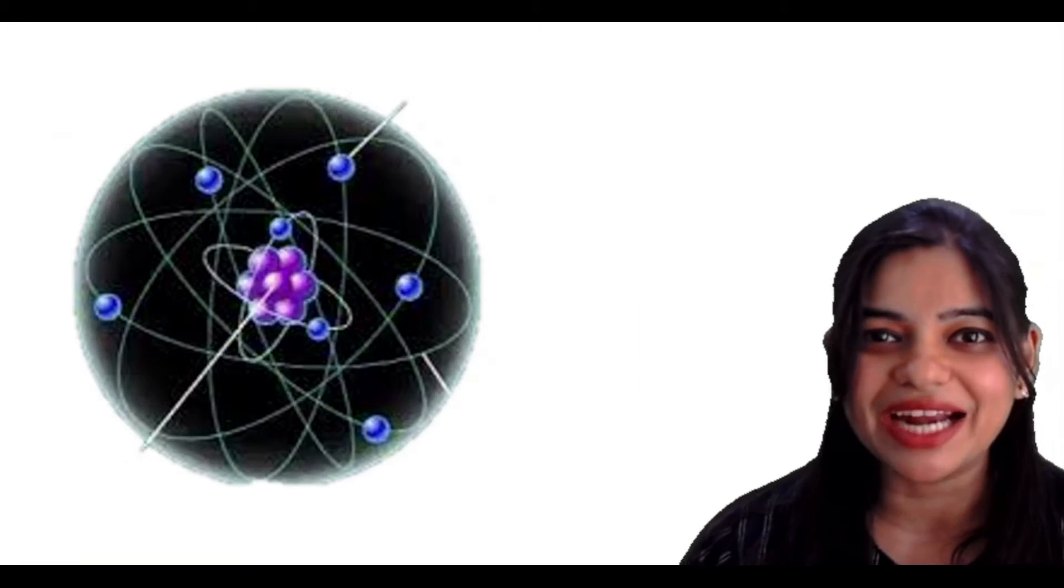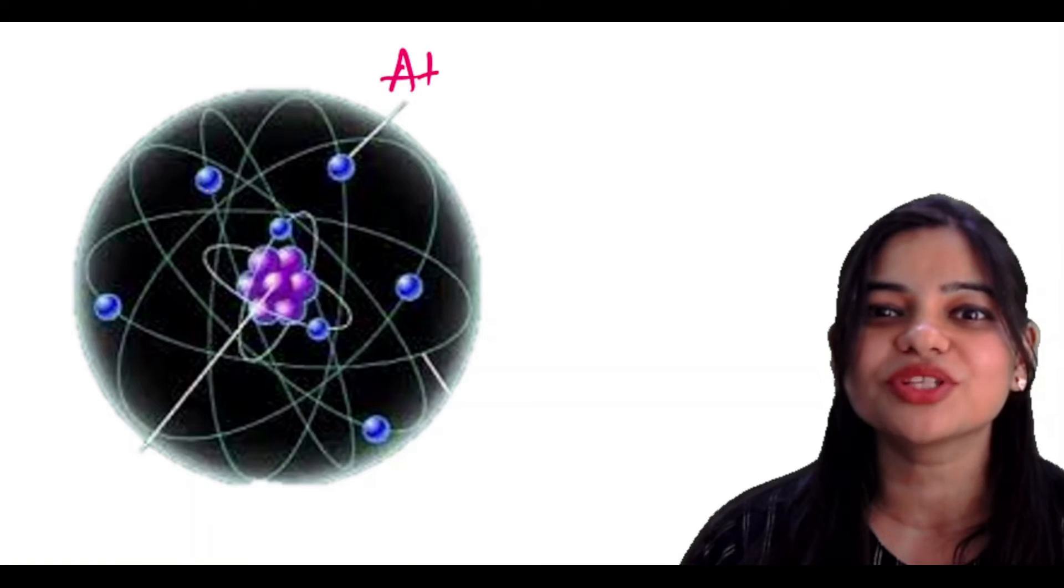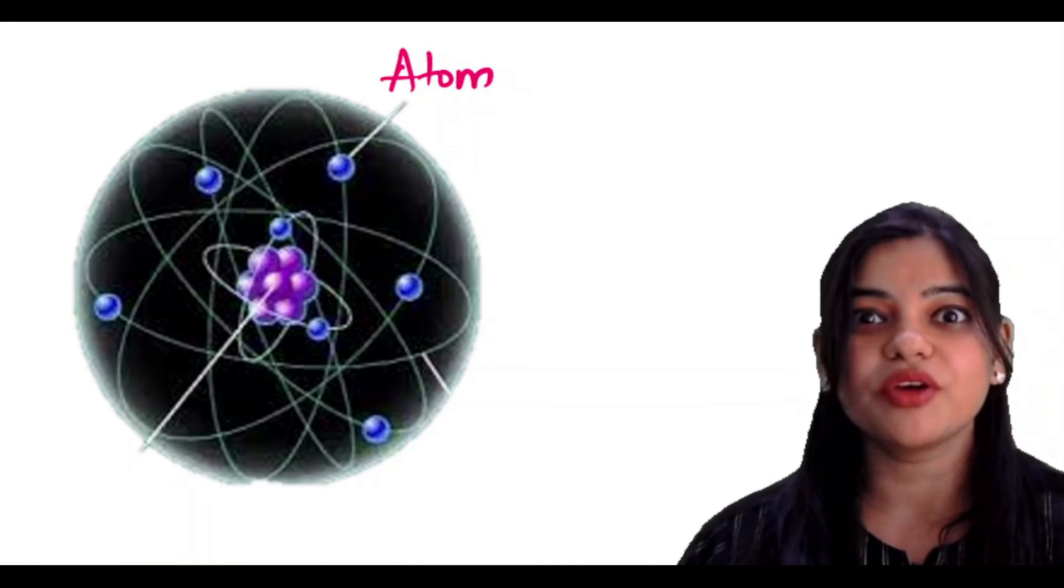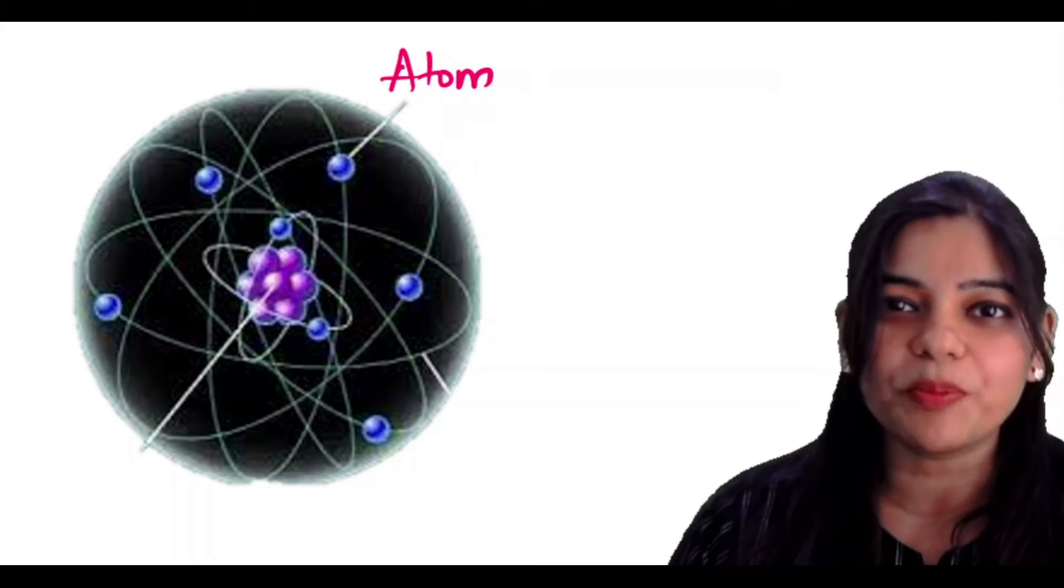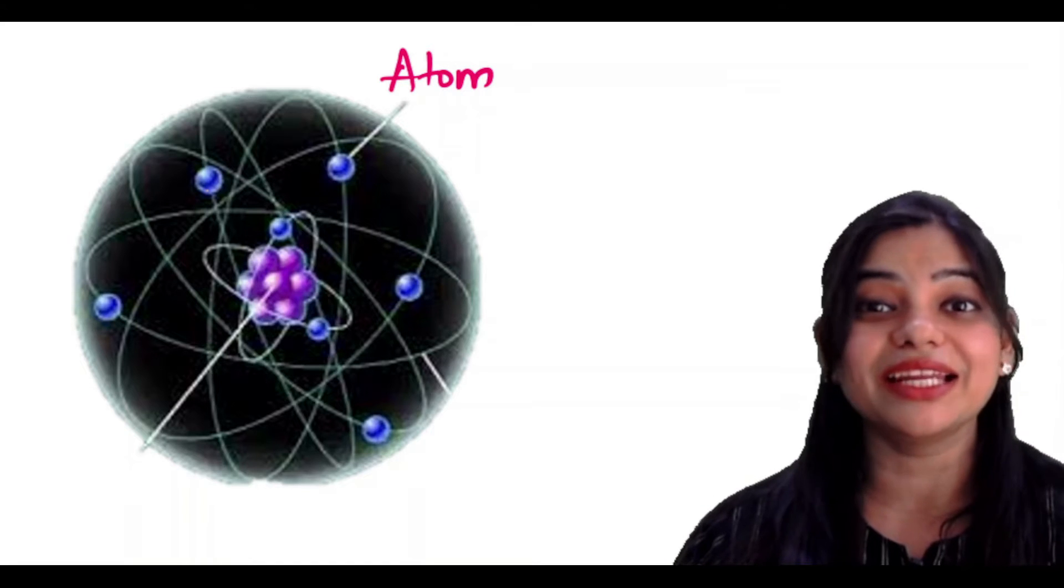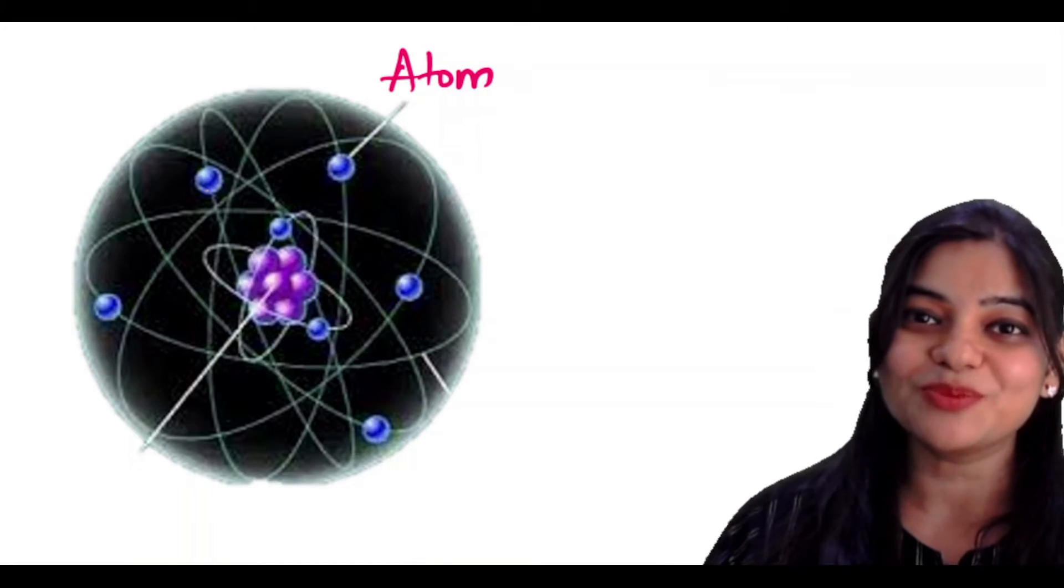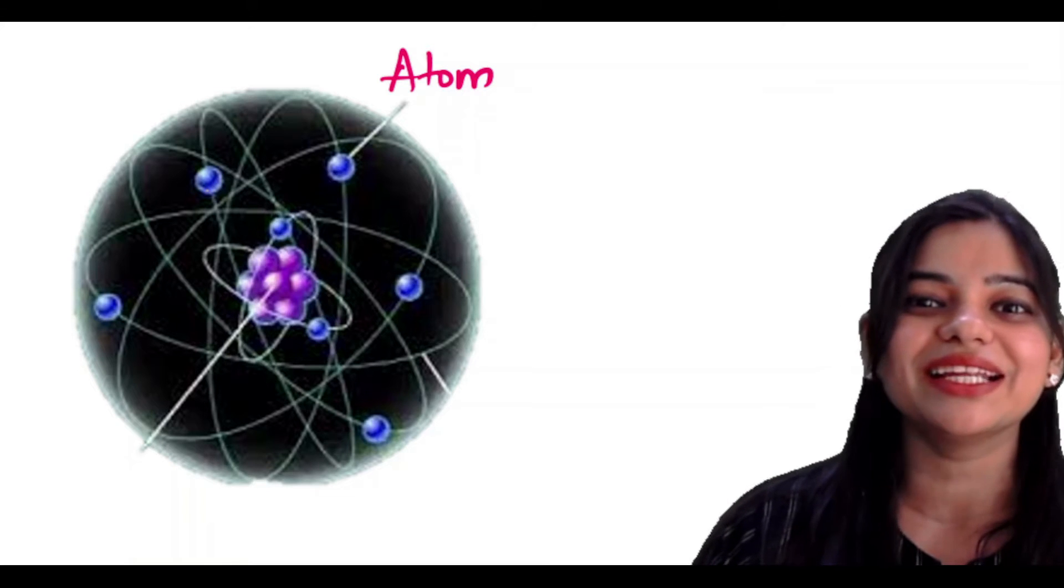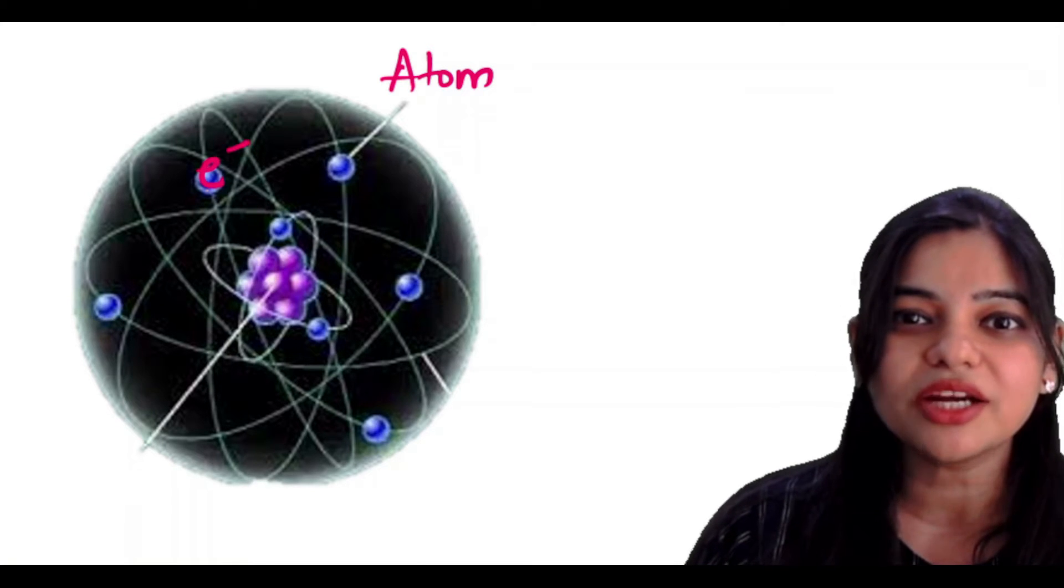So I have here atom. Now what are inside the atoms? Electrons. Now atoms, what do they do? Electrons absorb energy. Let's understand. If we have to heat any element or give electrical energy, so this atom absorbs energy. It will absorb this heat energy, and these electrons are in motion.